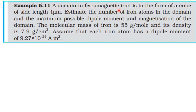A domain in ferromagnetic iron is in the form of a cube of side length 1 micrometer. Estimate the number of iron atoms in the domain, the maximum possible dipole moment, and the magnetization of the domain. The molecular mass of iron is 55 grams per mole, its density is 7.9 grams per centimeter cube, and each iron atom has a dipole moment of 9.27 × 10⁻²⁴ ampere meter squared.